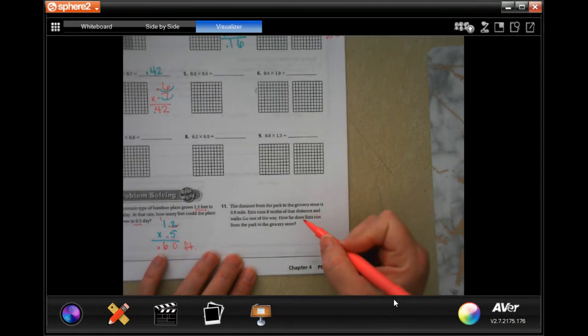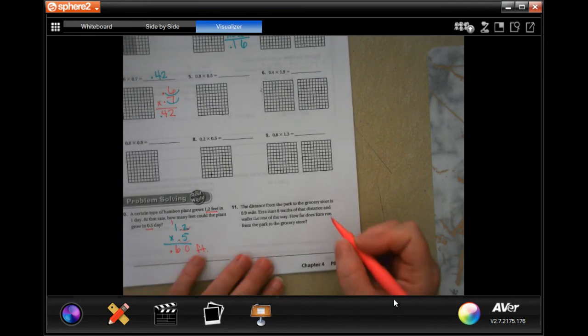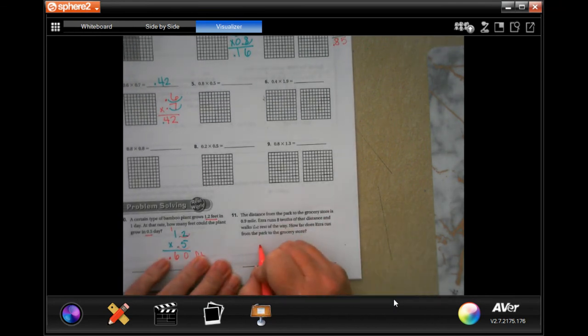The distance from the park to the grocery store is 0.9 miles. Ezra runs 8 tenths of that. Well, that means 0.8. That 8 is in the tenth spot. How far does Ezra run from the park to the grocery store? So, 8 times 9, 72. Went in 1, 2 places. 1, 2, 0.72. And that is in miles.